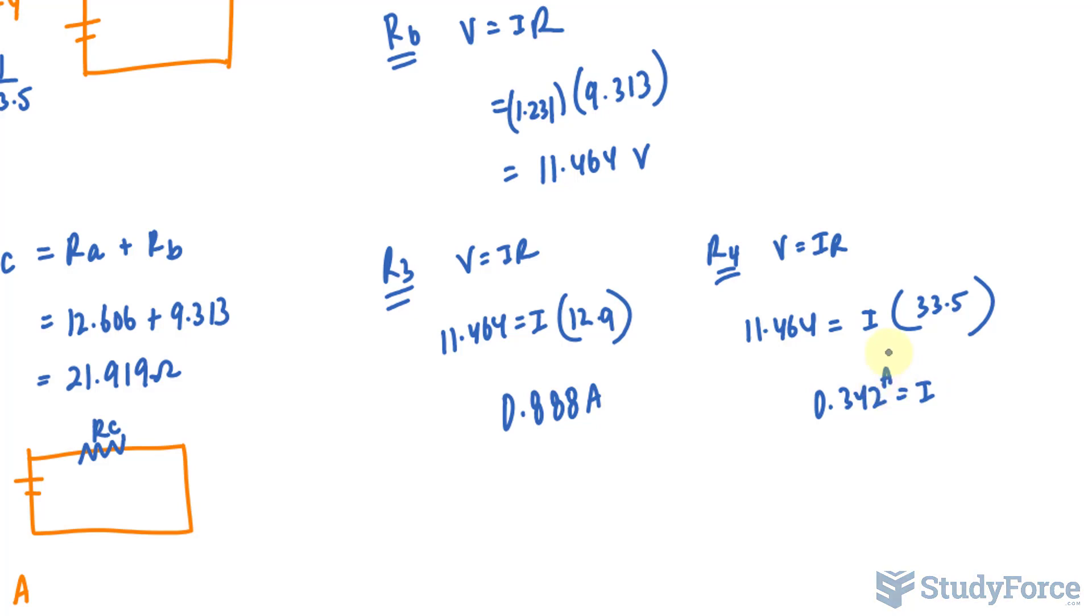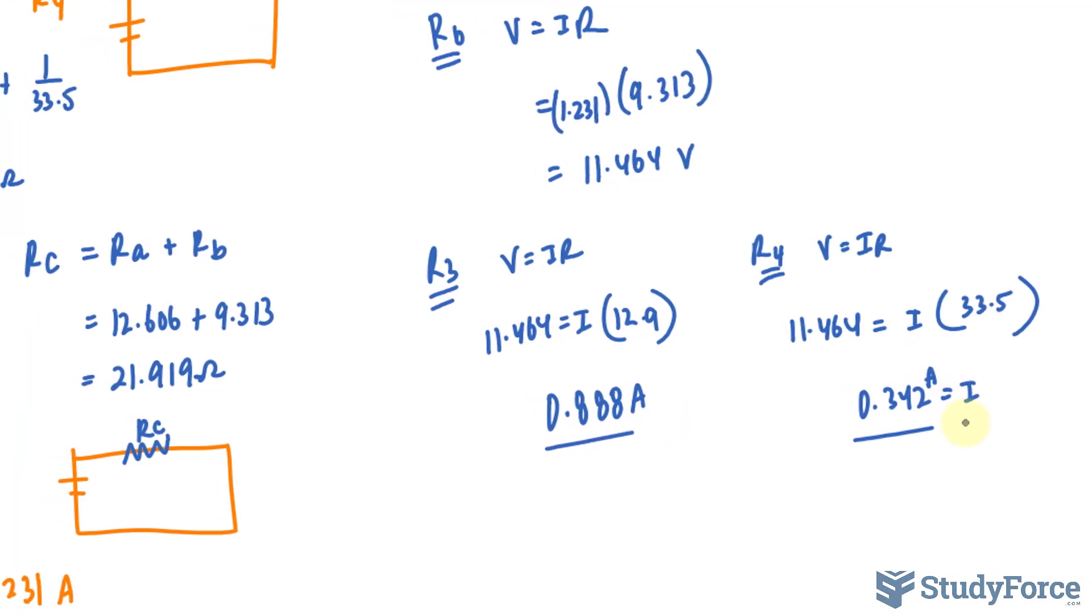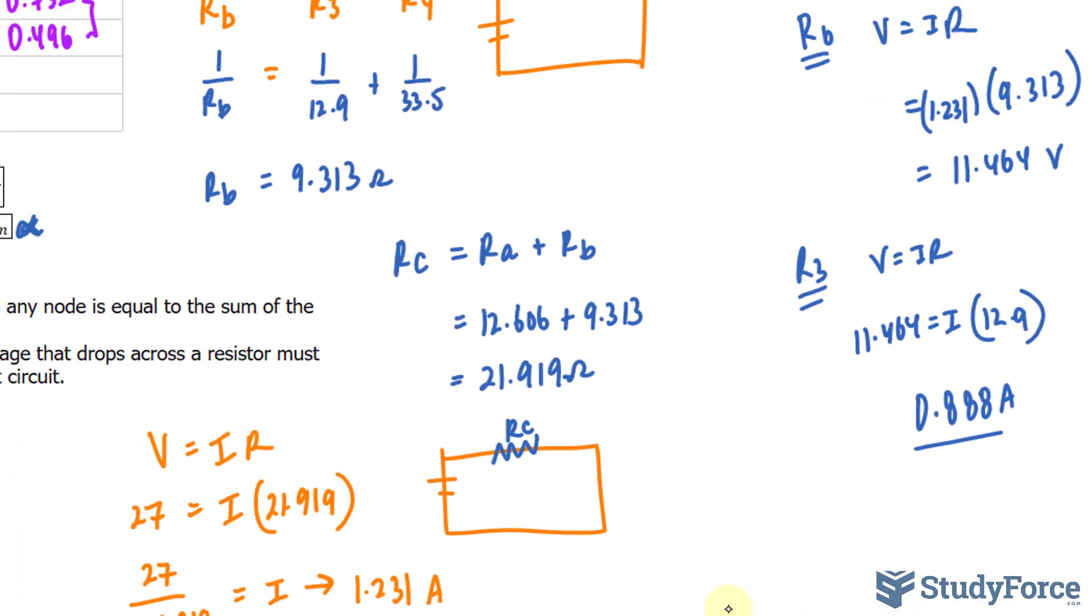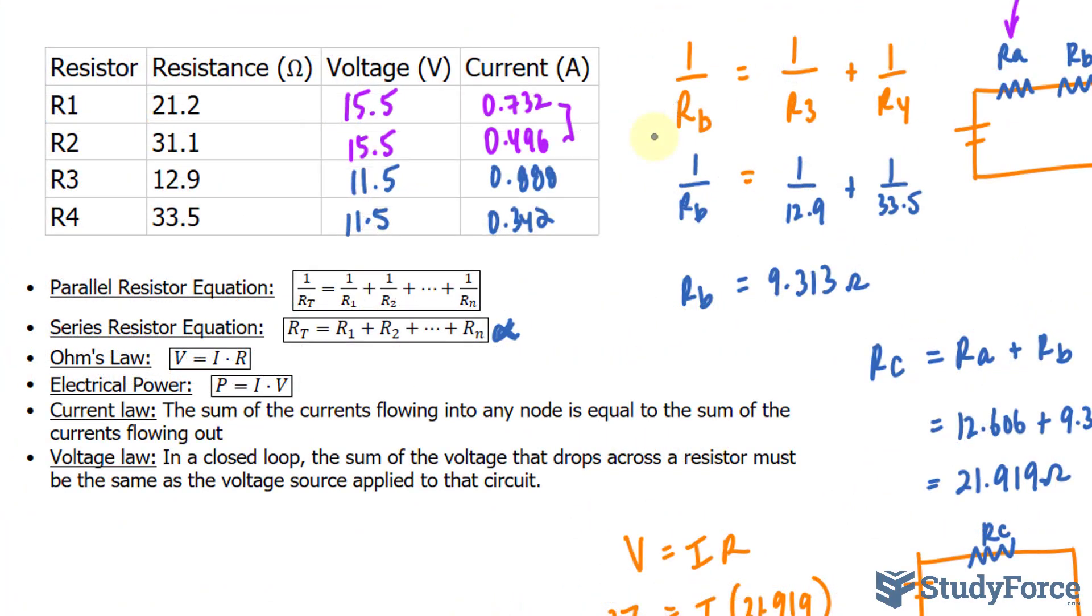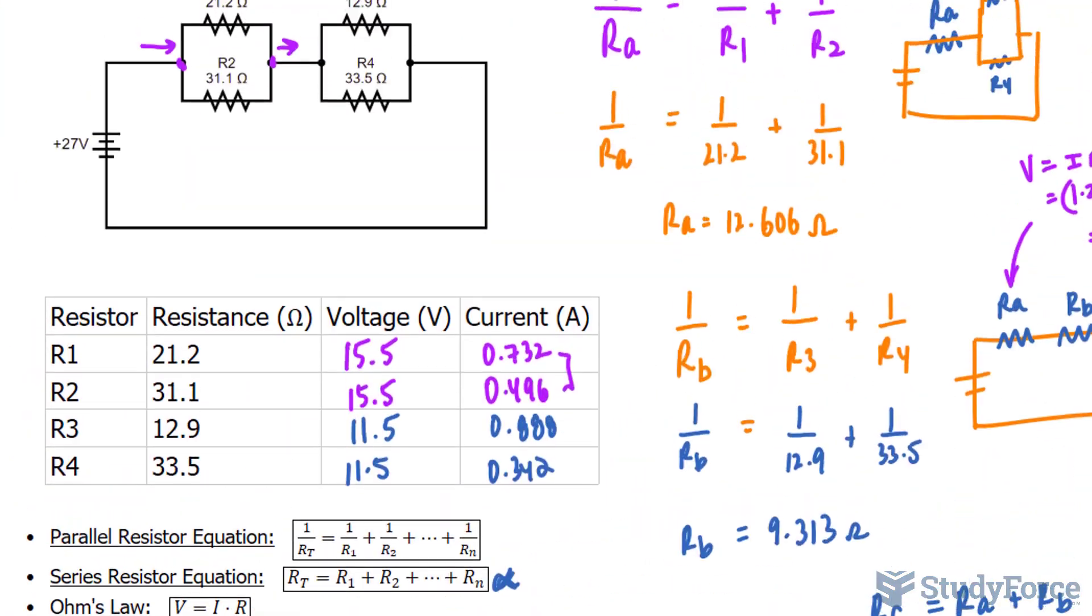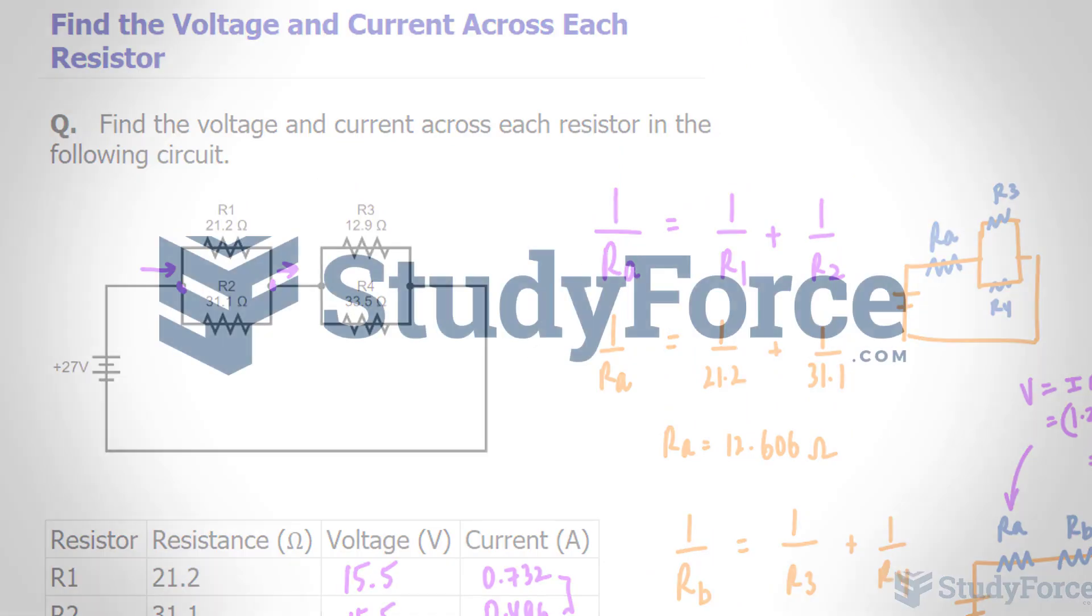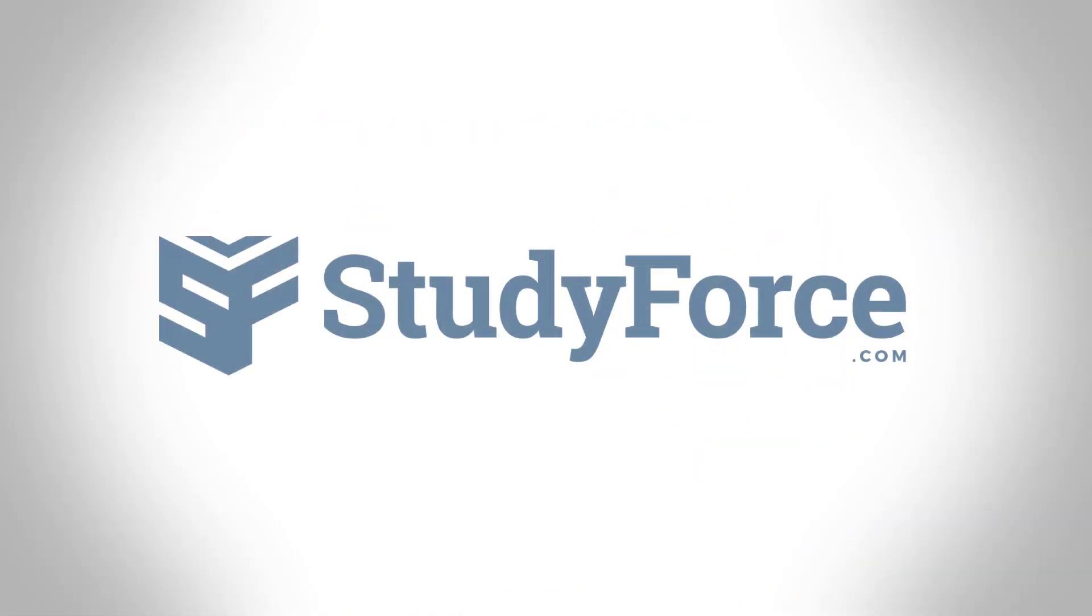Again, if you were to add these two values up, this one and this one, you should end up with 1.231, which was the current at the very beginning for RC. Now, we write these in to our table and we are done. And so there you have it. We have officially solved this circuit and have decoded its voltage and current across each resistor. Thank you for watching.